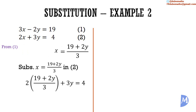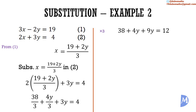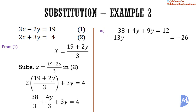Substituting, we get 2 multiplied by (19 plus 2y) over 3, plus 3y, is equal to 4. Expanding the brackets: 38 over 3 plus 4y over 3 plus 3y is equal to 4. We multiply by 3 to remove the fractions: 38 plus 4y plus 9y is equal to 12. 4y plus 9y is equal to 13y. We subtract 38 from both sides: 12 minus 38 is equal to negative 26. Dividing both sides by 13, we get y is equal to negative 2.